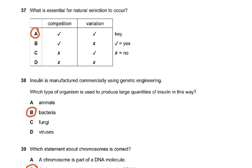Question 37: what is essential for natural selection to occur? Naturally, competition and variation. If there is variation and a change in the environment, the better-adapted individuals will survive and the less well-adapted will die and become extinct.